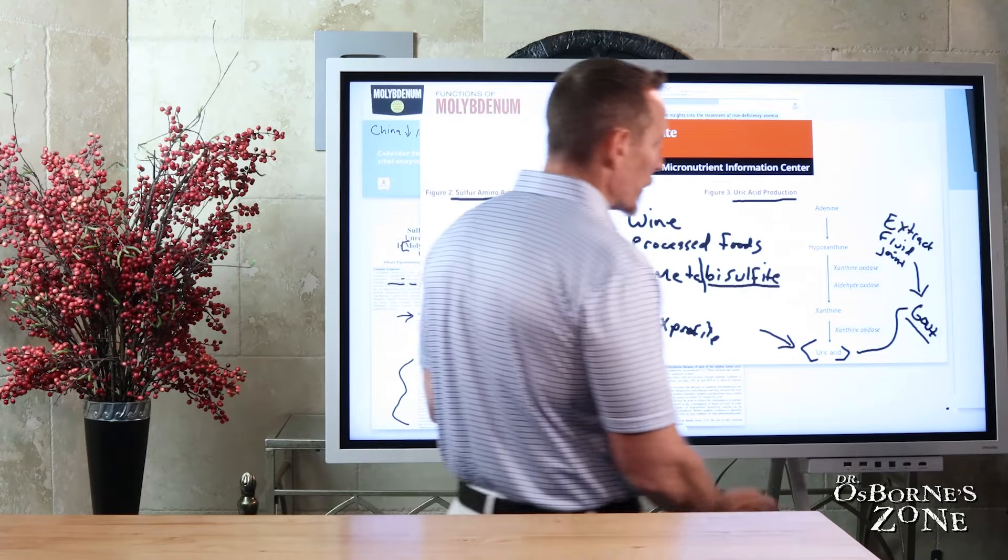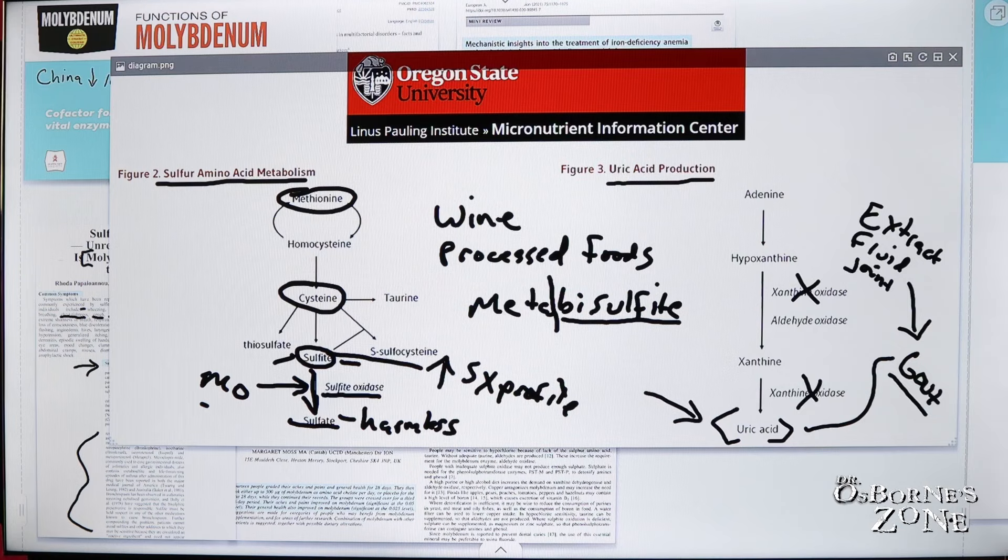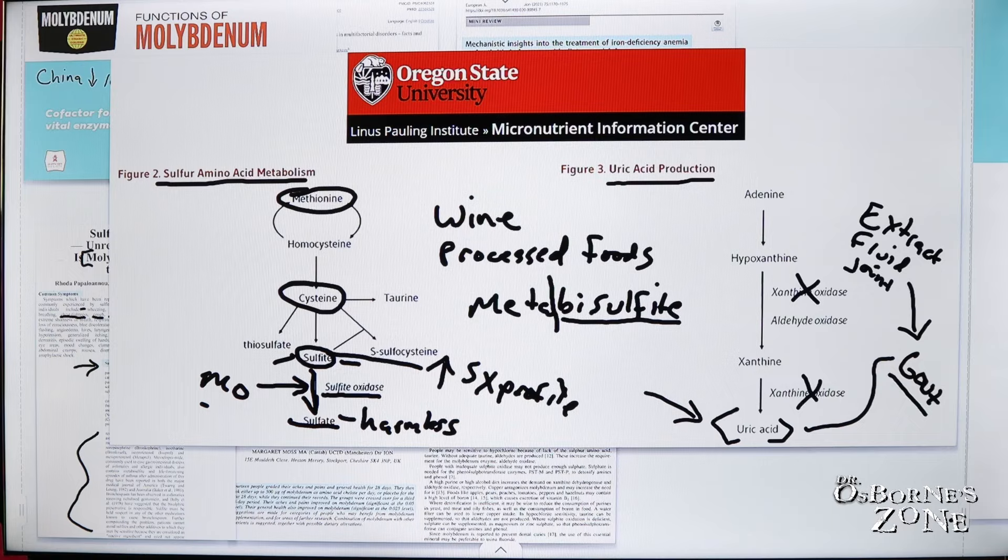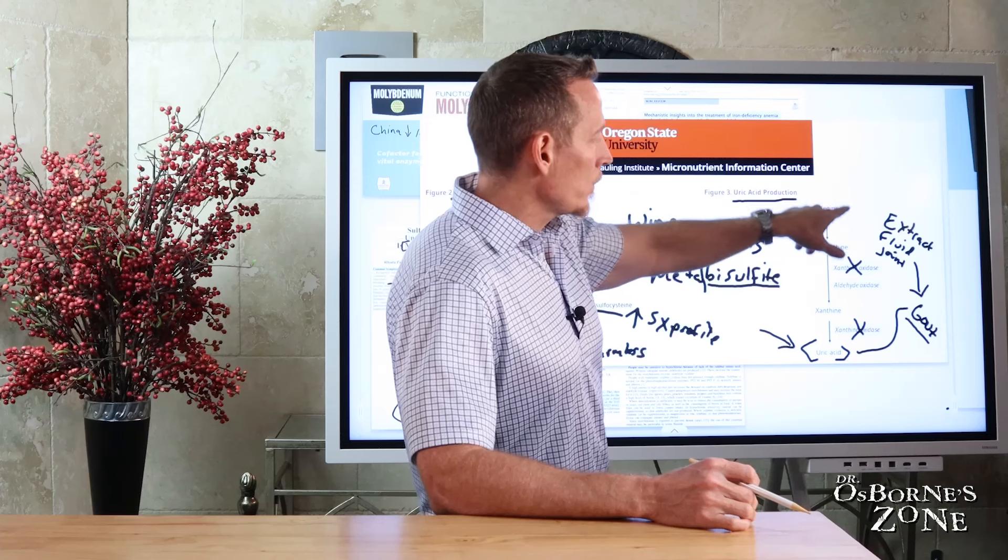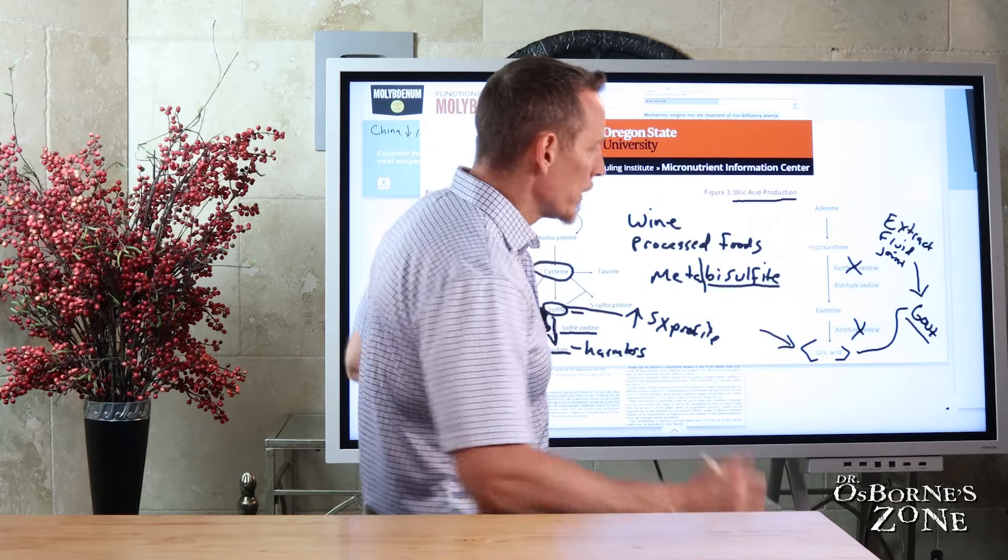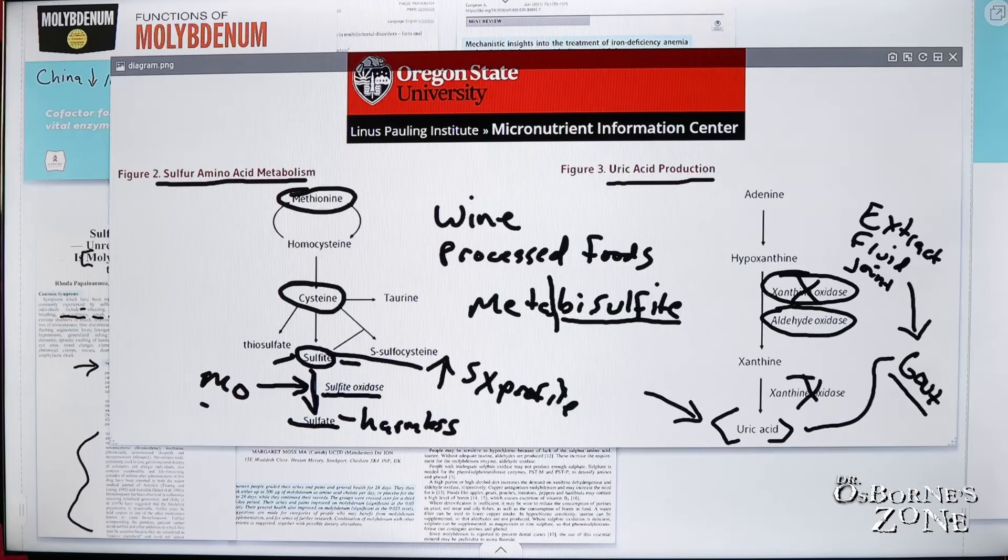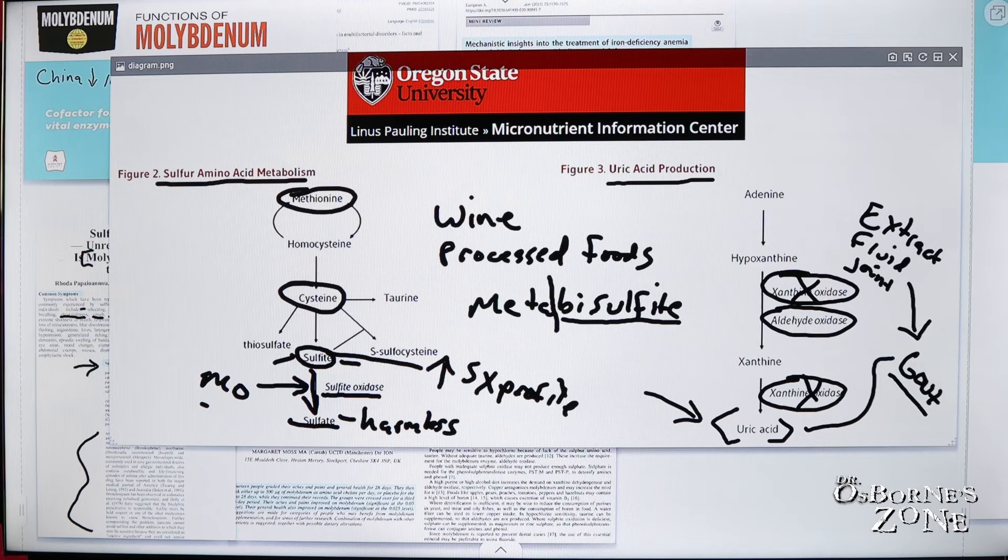There's certain medications that will block these enzymes right here. These enzymes are responsible for breaking down your DNA byproducts, right? So uric acid is broken down. You've got adenine, which is a purine that breaks down into, subsequently, uric acid through these molybdenum-based enzymes. So these enzyme systems here, these three, xanthine oxidase, aldehyde oxidase, and another xanthine oxidase, these three enzymes in this pathway are molybdenum-dependent. So without molybdenum, they won't work as well, and so you can get backed up.